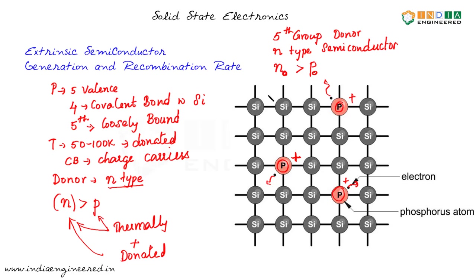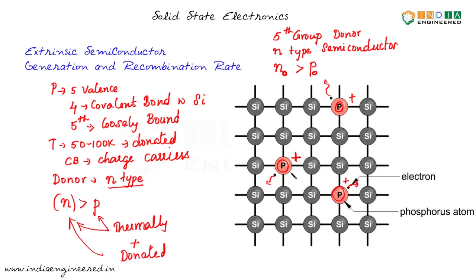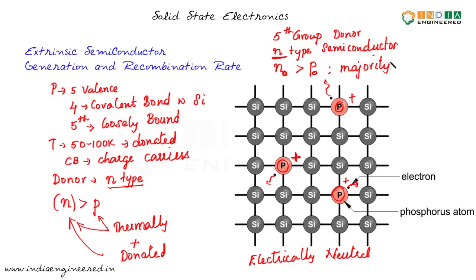The question is: is this silicon crystal with all these impurities electrically neutral? The answer is yes — it is electrically neutral. Even though an electron is donated to the crystal, a corresponding positive charge is created on the phosphorus atom, so the overall system remains neutral. The name N-type does not mean the semiconductor has a net negative charge. N-type simply means the majority charge carriers are electrons, because the number of electrons is greater than the number of holes.